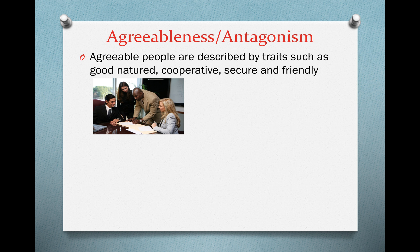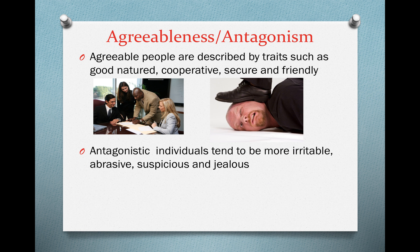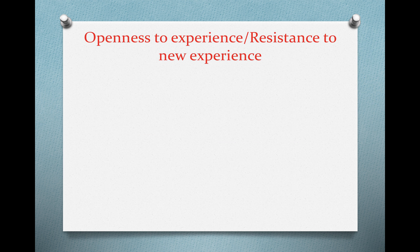Agreeableness versus antagonism: agreeable people are friendly and cooperative, really good to be around, and tend to be a positive influence in groups. In contrast, antagonistic people tend to be abrasive, suspicious, jealous, and irritable — they tend to cause conflict.